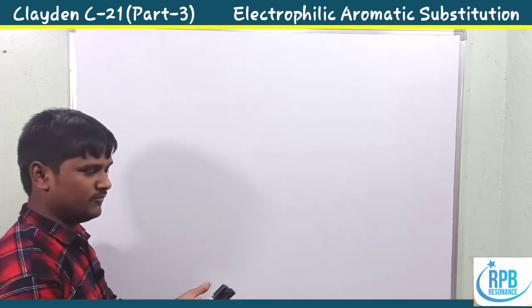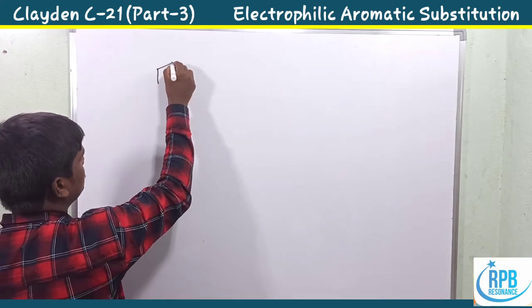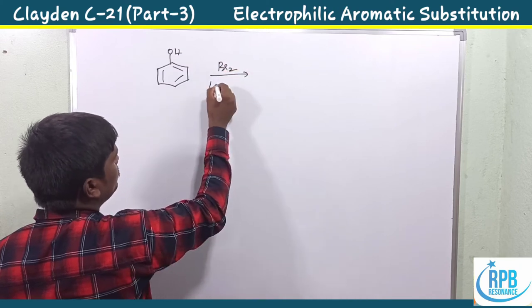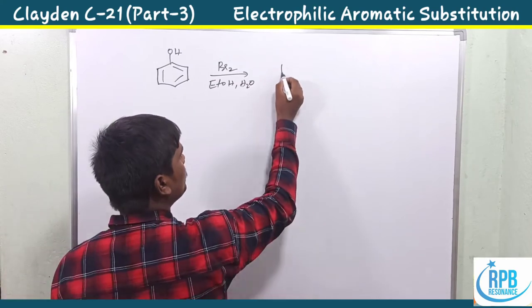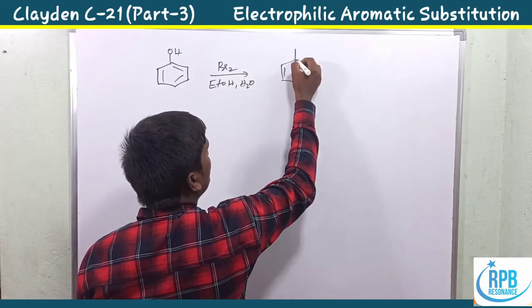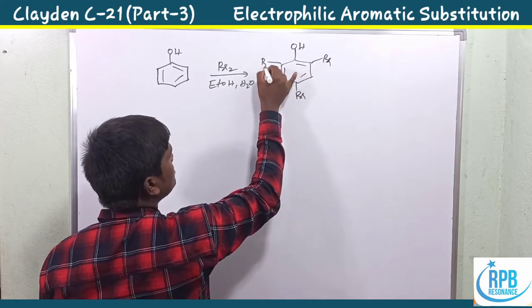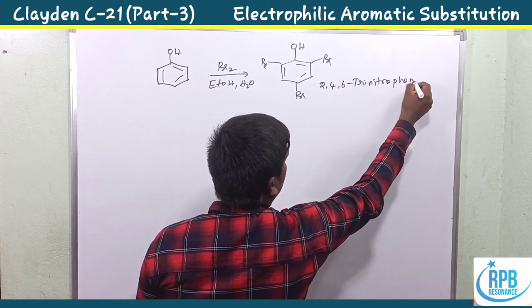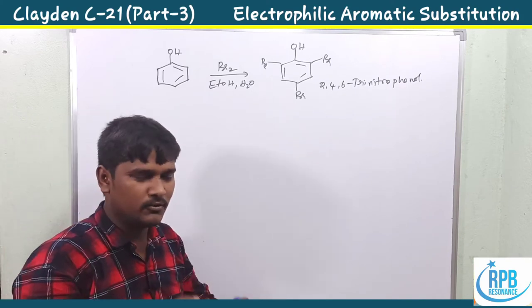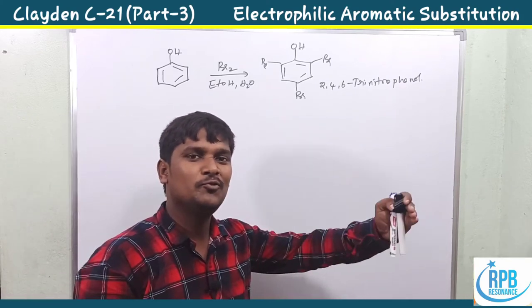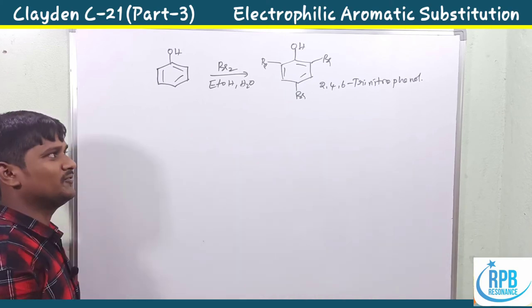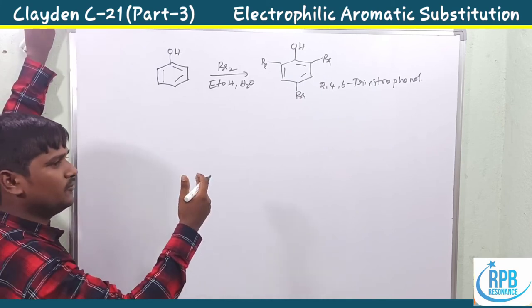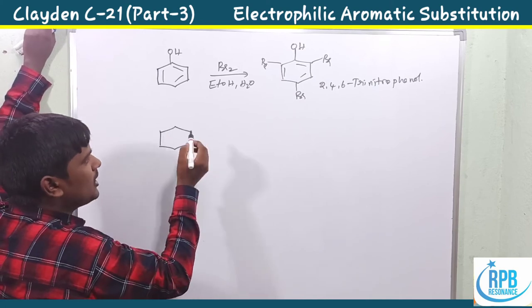Now let's look at some examples. Phenol treated with bromine in ethanol-water produces a triply electrophilic substituted product at the 2nd, 4th, and 6th positions — that is 2,4,6-tribromophenol. Whenever phenol is treated with bromine in ethanol solvent it produces 2,4,6-tribromophenol. Let's discuss the complete mechanism of this reaction.